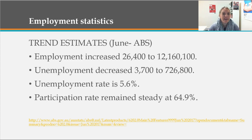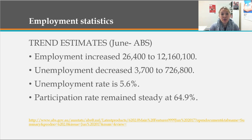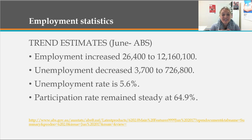I've just popped a couple of really quick statistics on this slide. I'm not very mathematically minded and I find statistics a little bit overwhelming sometimes, so I tried to choose some pertinent statistics that really paint a good picture of what we're talking about when we talk about employment and income management and social security. These statistics are updated monthly by the ABS and these are from June. Employment increased over that month to 12,160,100, unemployment decreased, the unemployment rate is at 5.6%, and the participation rate remains steady.